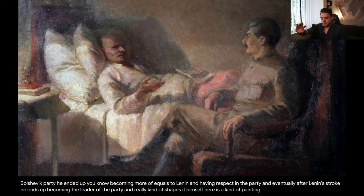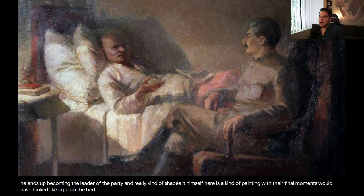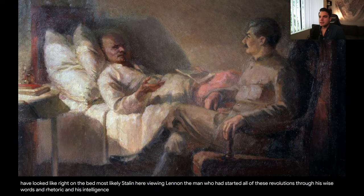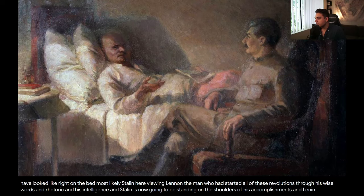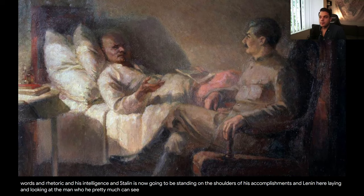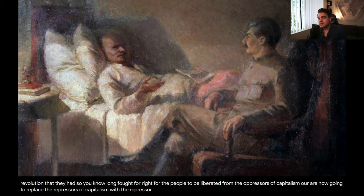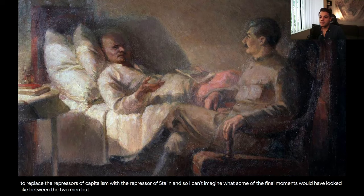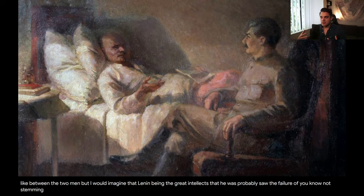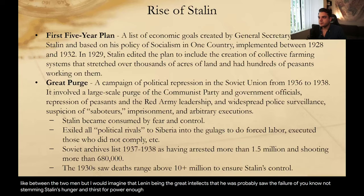Here is a painting depicting what maybe some of their final moments would have looked like — most likely Stalin viewing Lenin on the bed, the man who had started all of these revolutions through his wise words, rhetoric, and intelligence. Stalin is now going to be standing on the shoulders of his accomplishments. Lenin laying there looking at the man who he pretty much can see is going to lead Russia through a bloody campaign of brutal repression — the revolution they had so long fought for, to liberate the people from the oppressors of capitalism, now going to replace the oppressors with the repressor of Stalin.